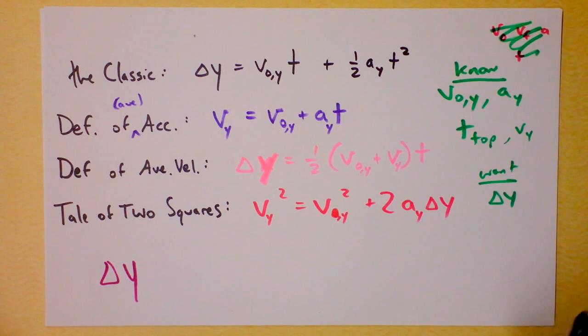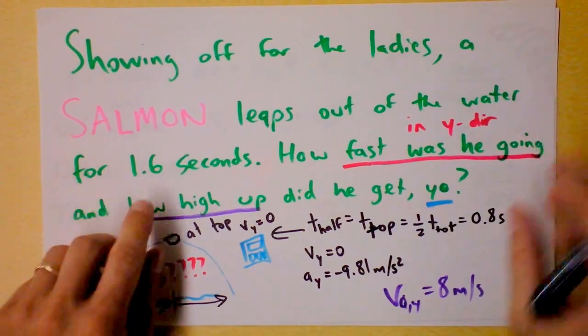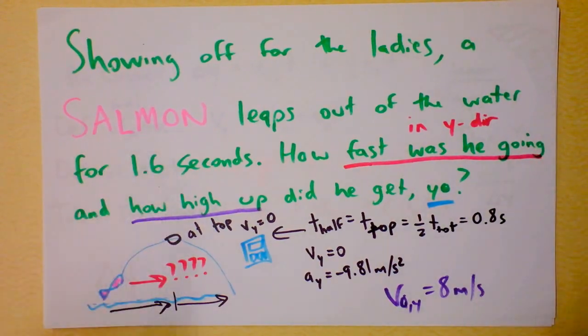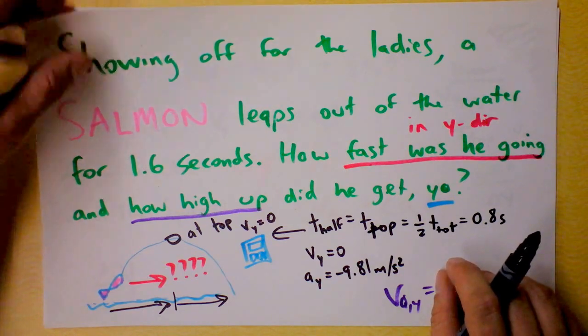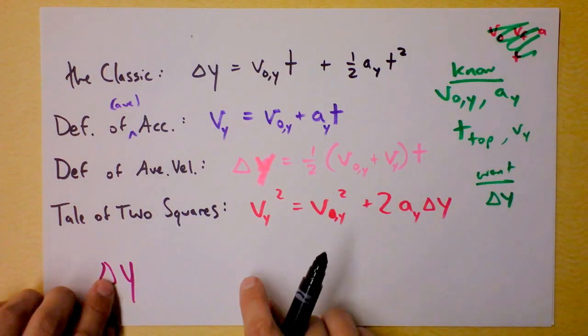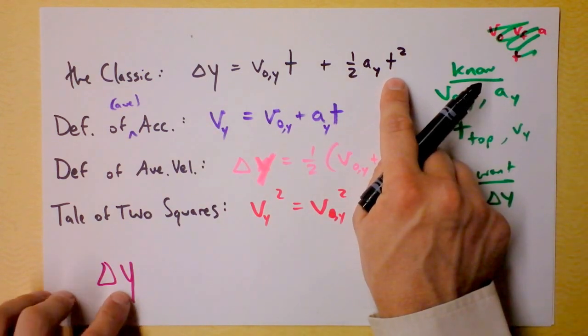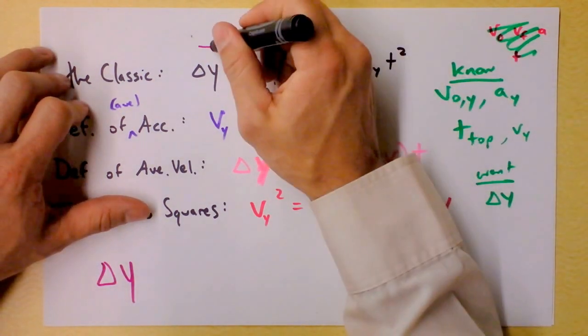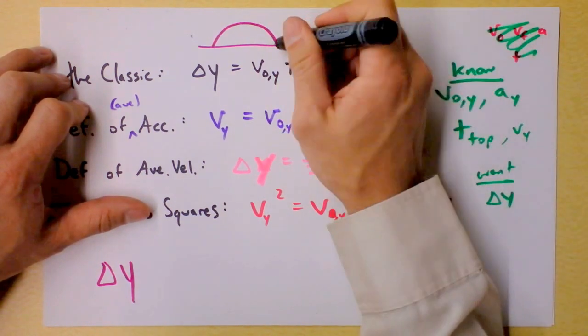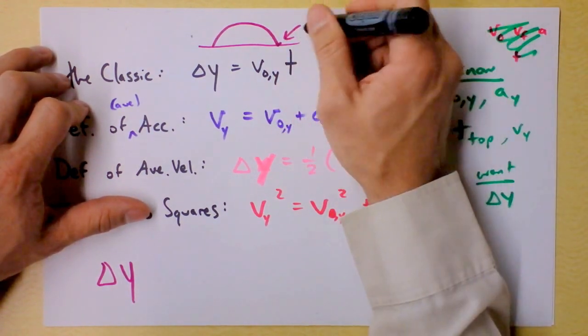Now the careful thing is, I know that this salmon was in the air for 1.6 seconds. If I take the classic, and I plug in the fact that the classic has time here and time here, and if I plug in the total time that that salmon was in the air, remember the salmon's doing this, then I will find out how high the salmon is right there.